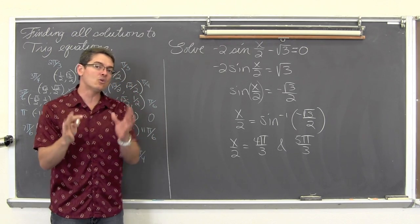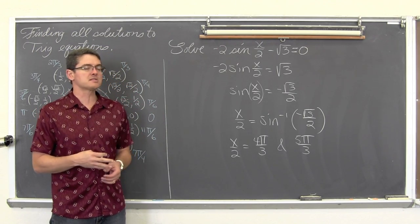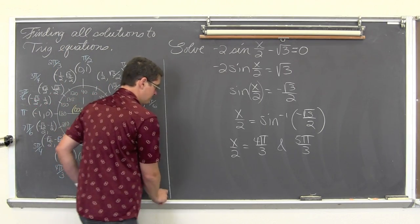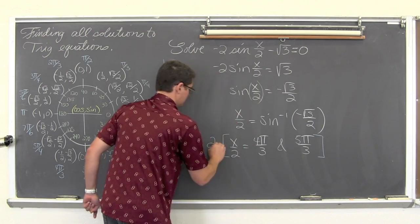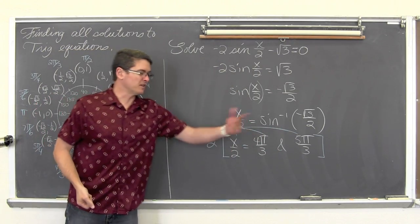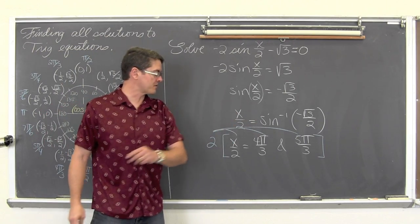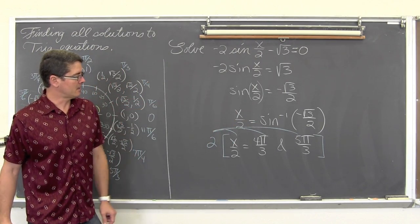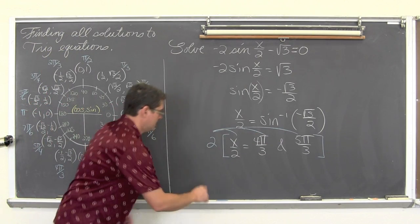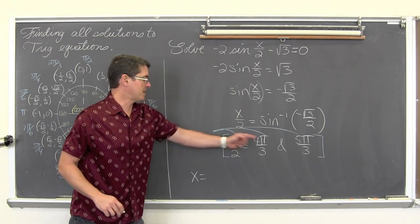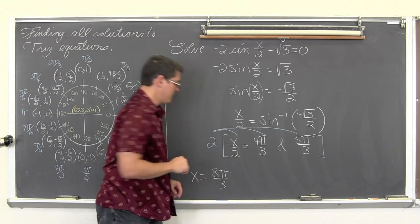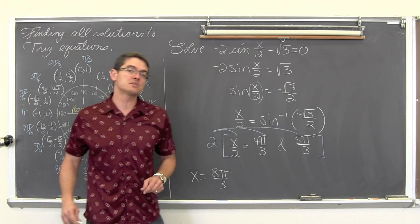But we were not asked to solve for the angle measure inside the sine function of x over 2; we are trying to solve for x. So we are going to multiply everything by 2 to get rid of the division by 2. We have two equations: x over 2 equals 4 thirds pi, and x over 2 equals 5 thirds pi. Multiplying everything by 2, we get x is equal to 8pi over 3 and 10pi over 3.